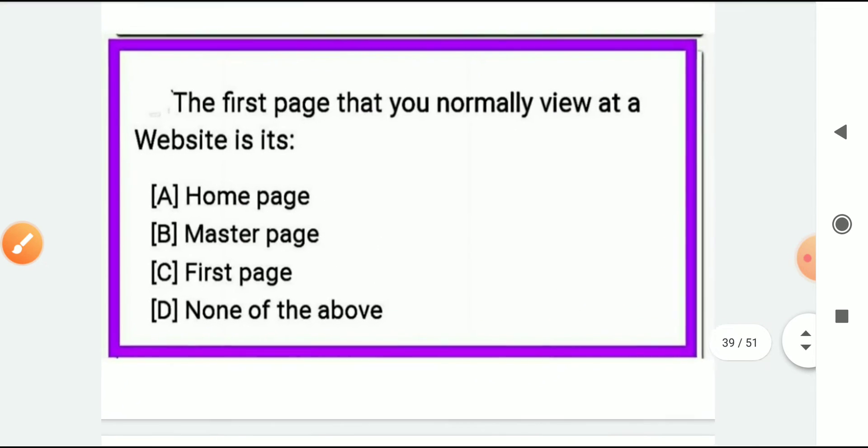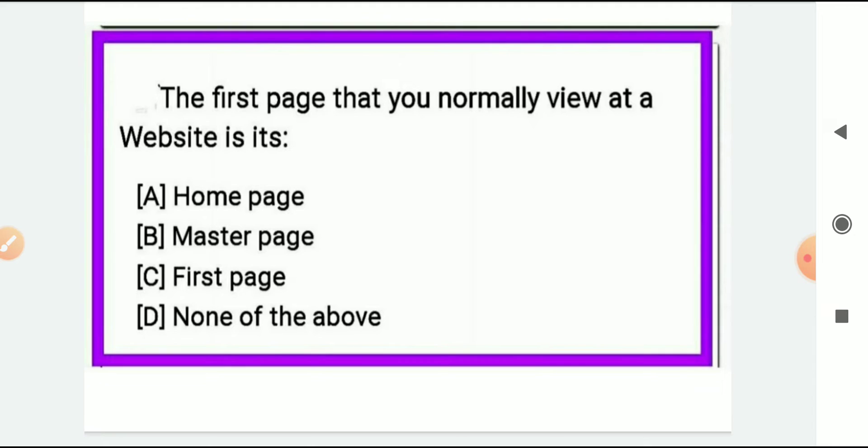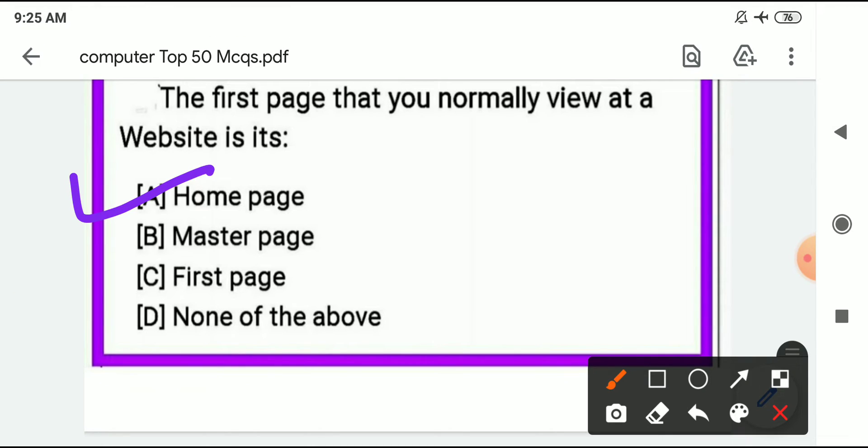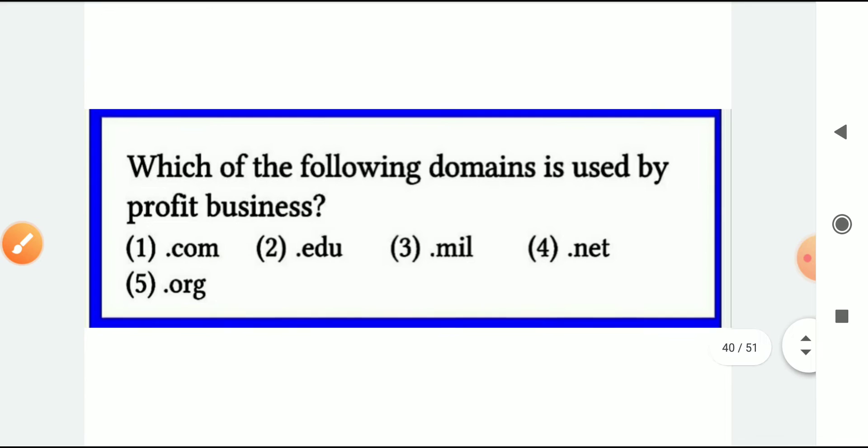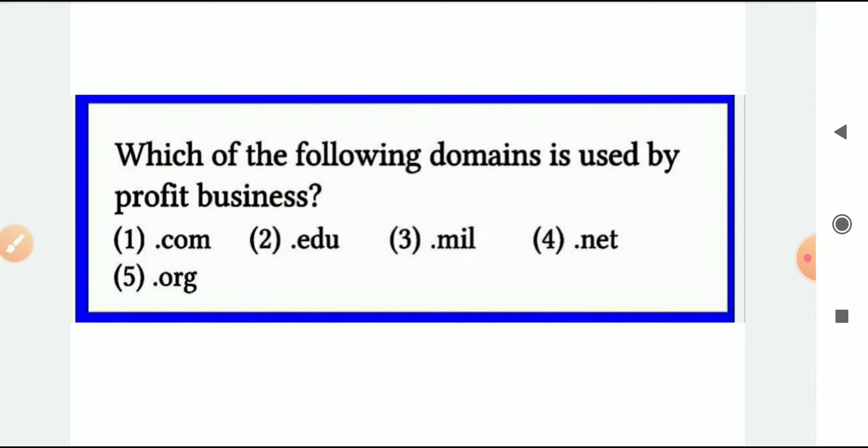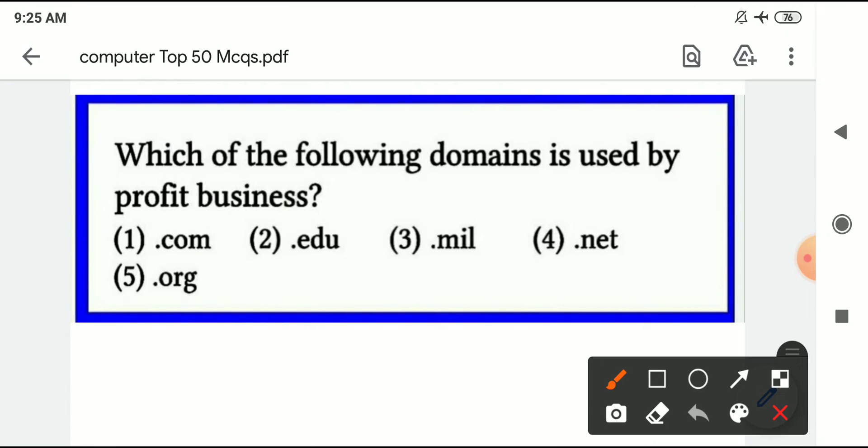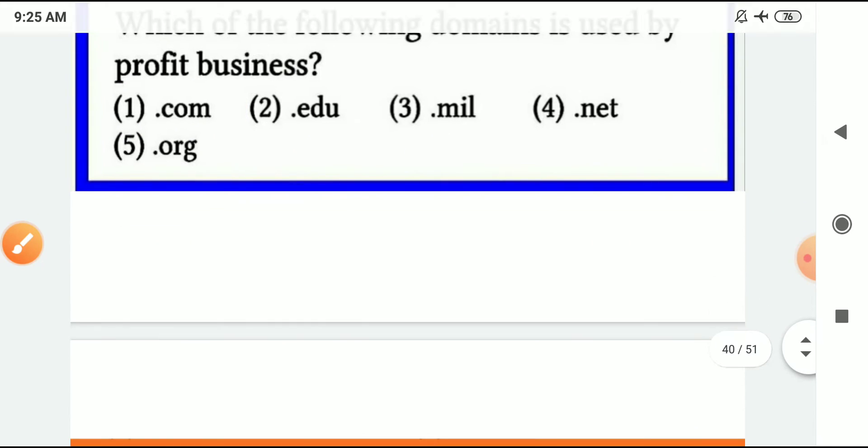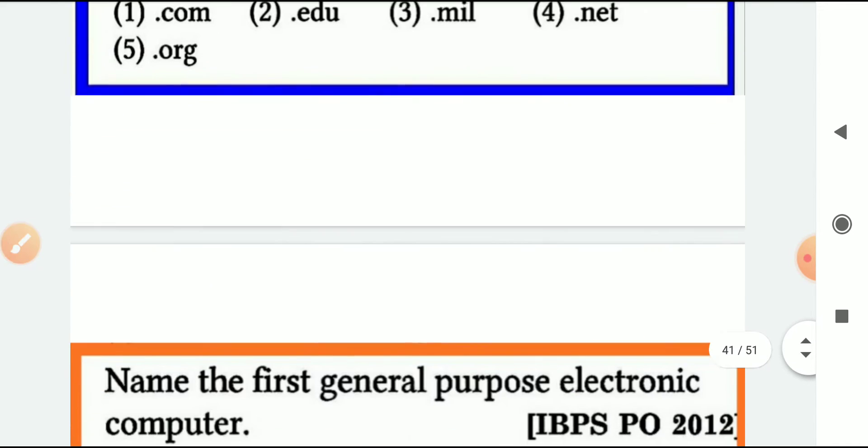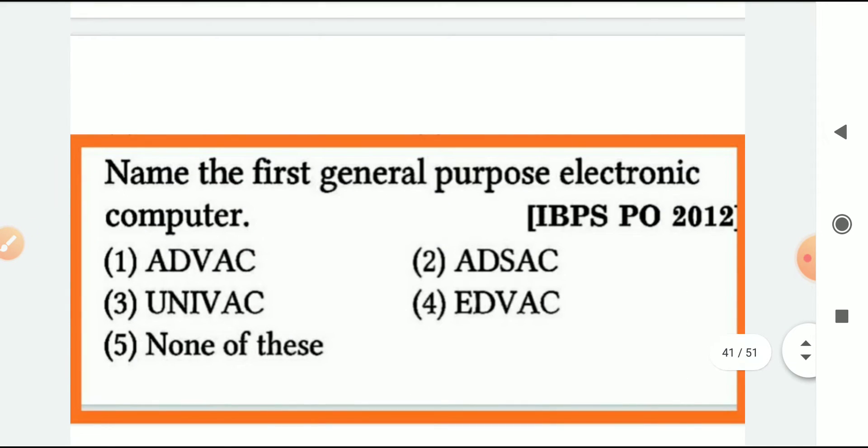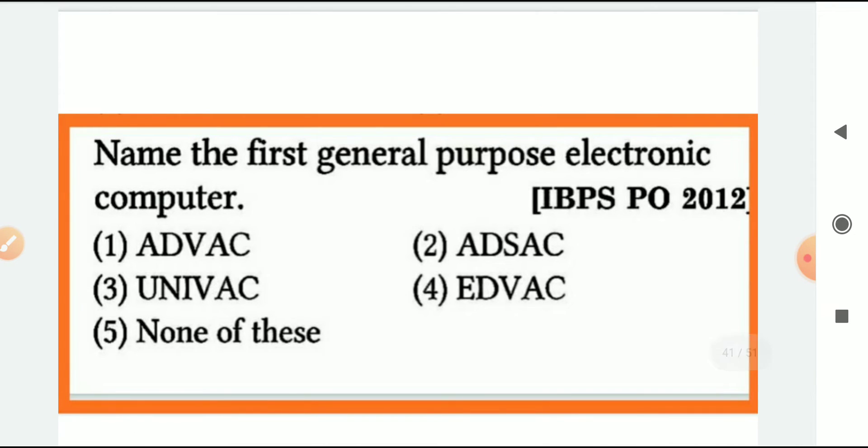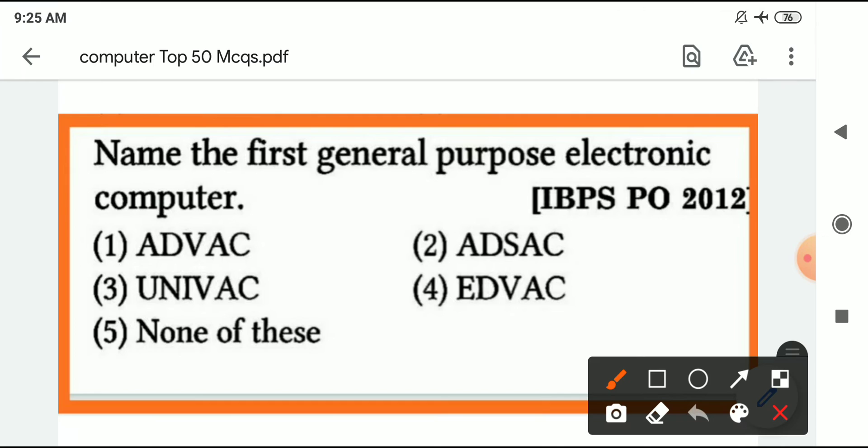The first page that you normally view at a website - that is home page. Which of the following domain is used by profit business? That is .com domain. For non-profit it's .org, for education .edu, for military .mil, for networking .net. These are different domain names. Name the first general purpose computer - the first electronic computer was ENIAC, but the first general purpose computer was UNIVAC, Universal Automatic Computer.